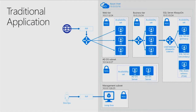Let's look at a standard three-tier application diagram — a web tier, a business tier, SQL Server or some data tier, Active Directory, and a jump box. Most developers in the room have built something like this. As we step back and look at all the components, let's think about where we would start with compliance for something like this.